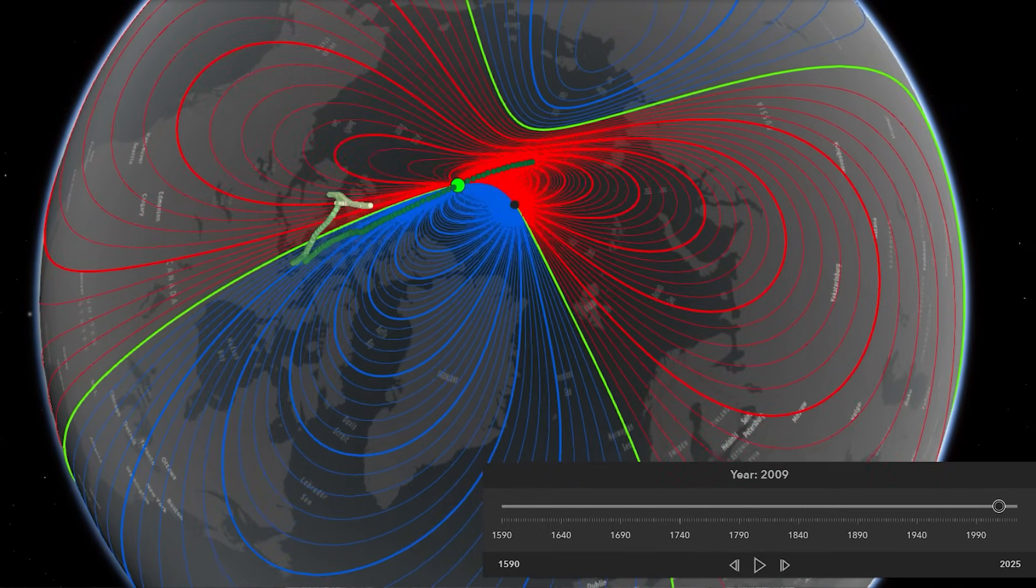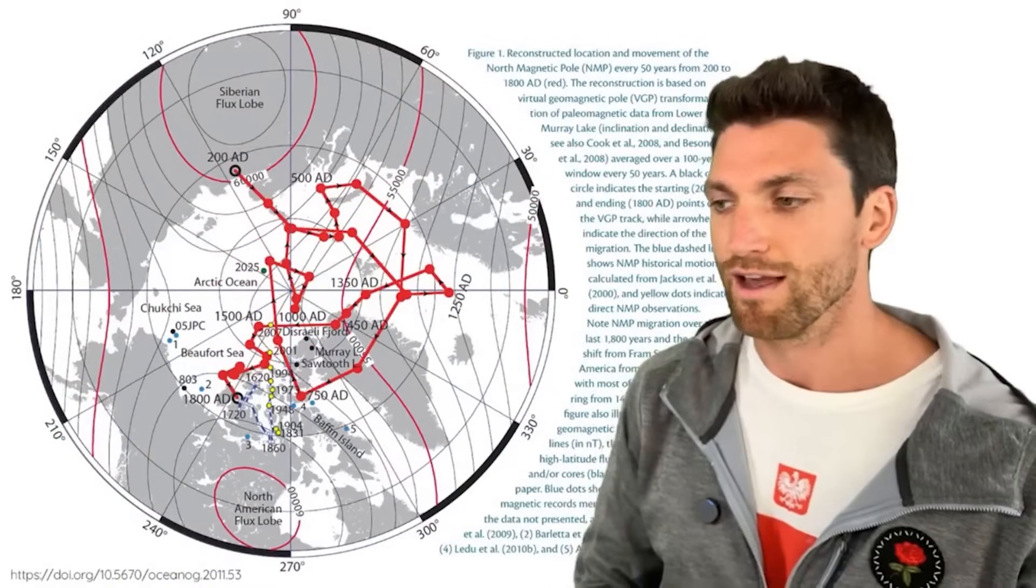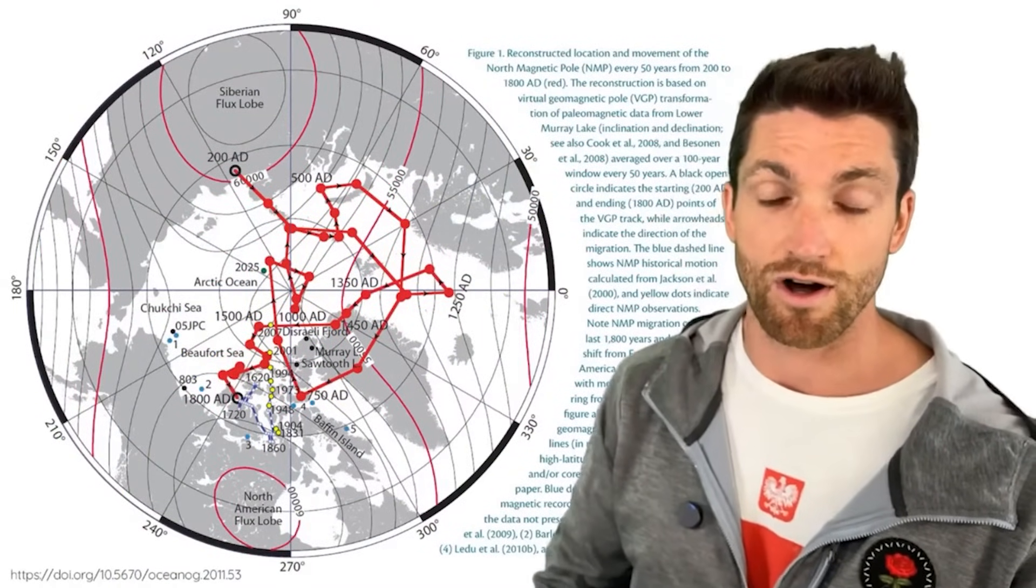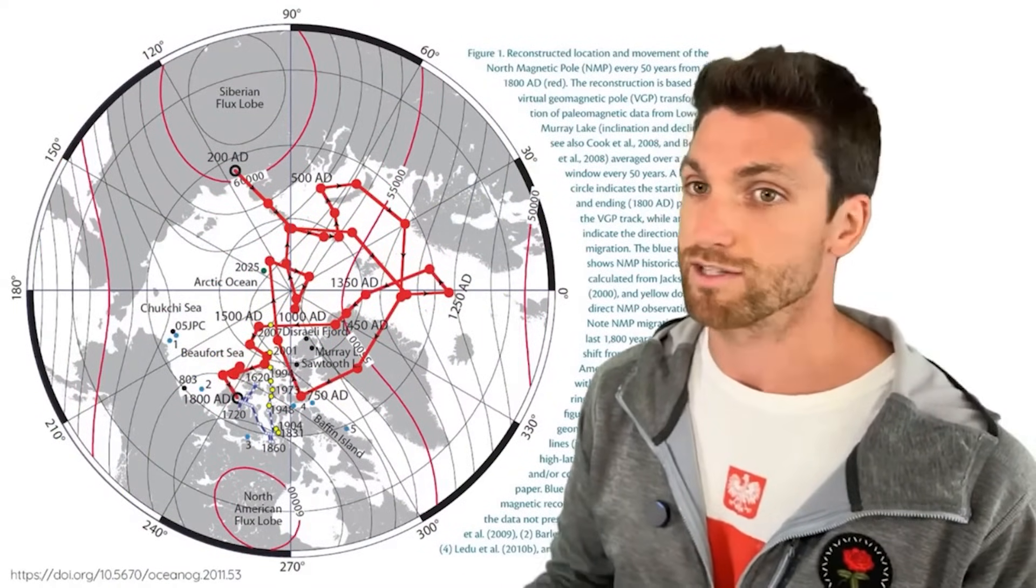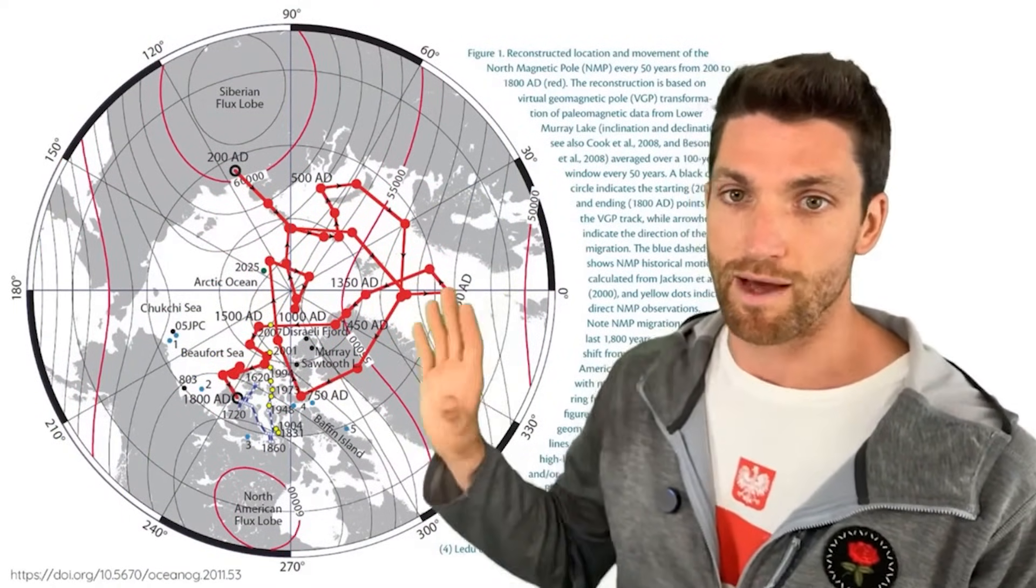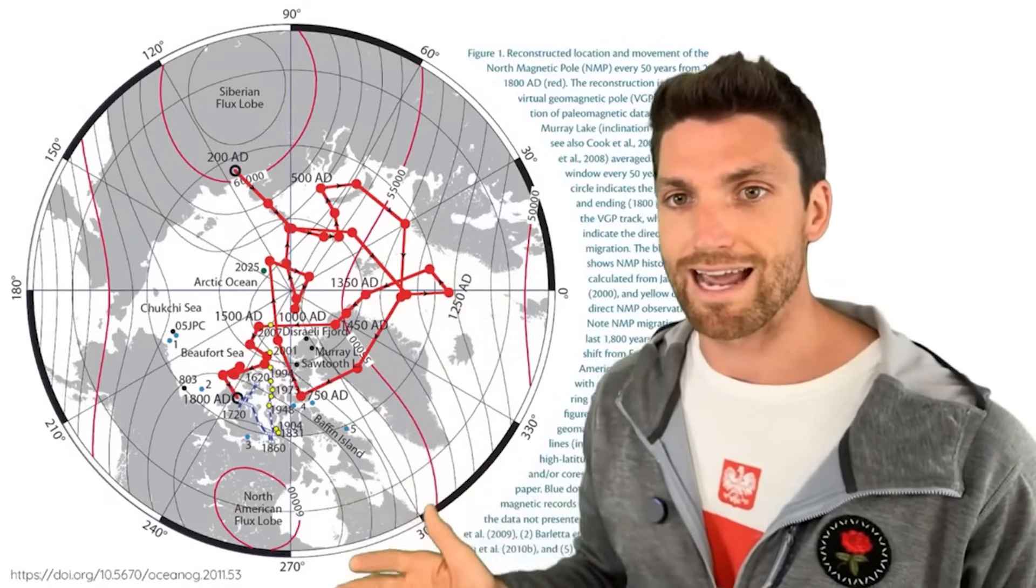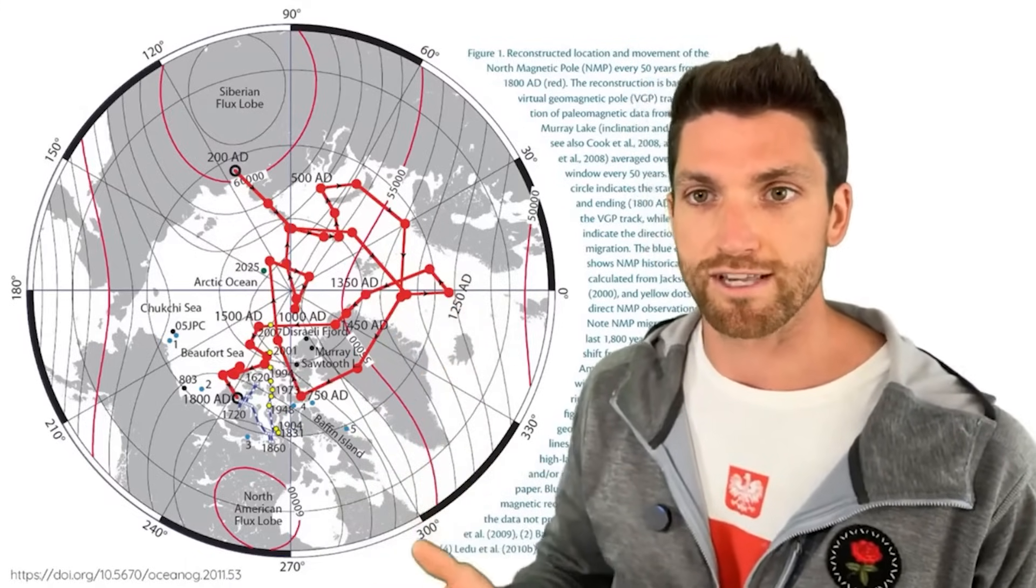And so you shouldn't be worried about Earth's magnetic field. Has it weakened? Yes. Is it still strong? Based on the historic geologic record, it's still very strong. Yes. The movement of the poles isn't anything that's outside of normal secular variations.